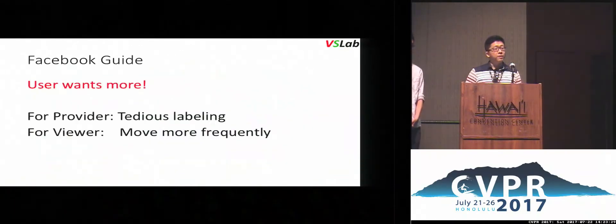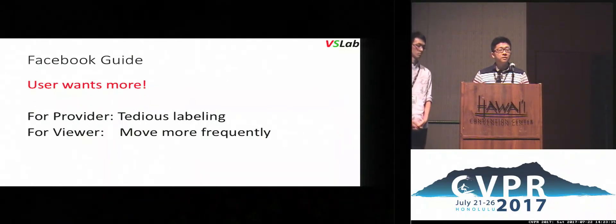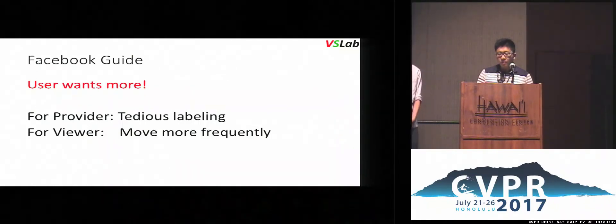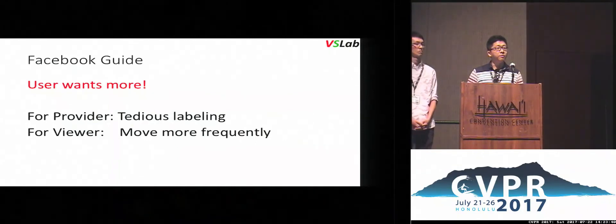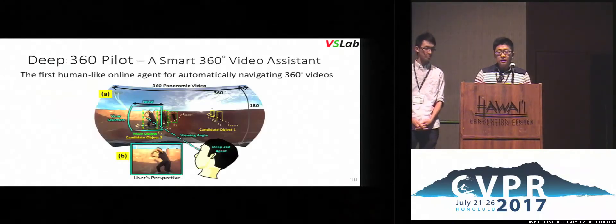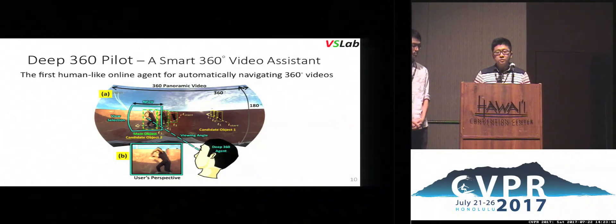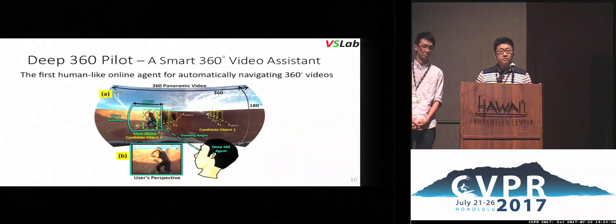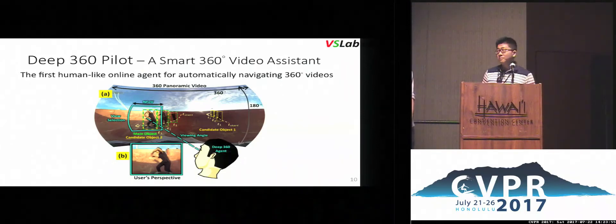But we think we can do better. For a video provider, labeling every two seconds is very tedious. But for the user, they may need the viewpoint labeled more frequently than every two seconds. That is why we proposed Deep 360 Pilot — a smart 360-degree video assistant. Next, I'll hand the time to my student, Honi, to talk about all the details.